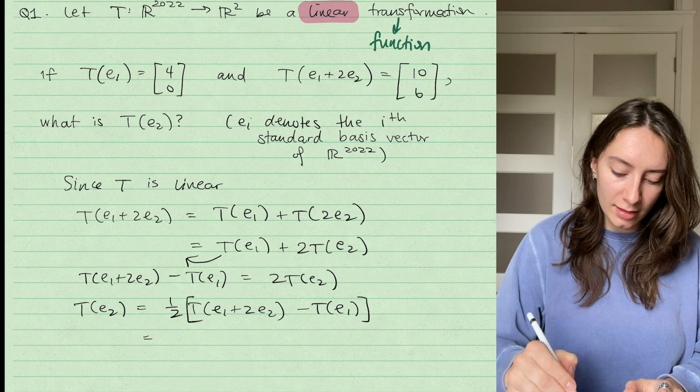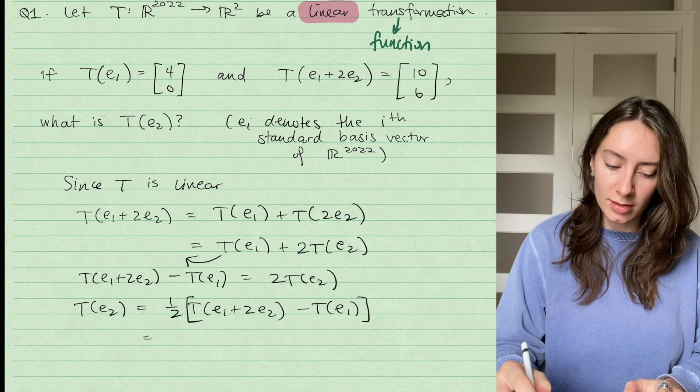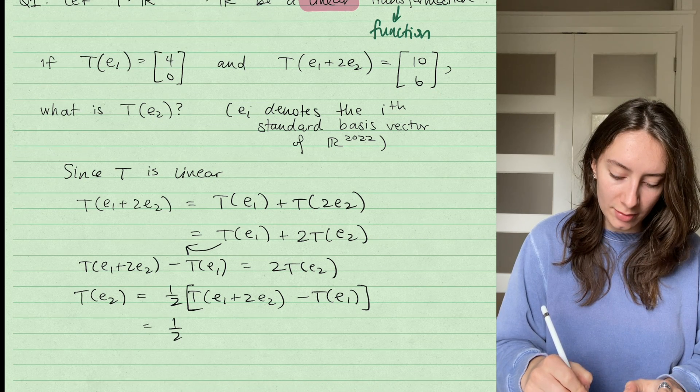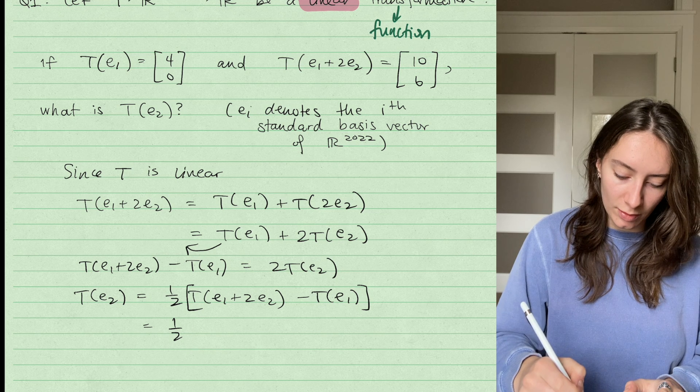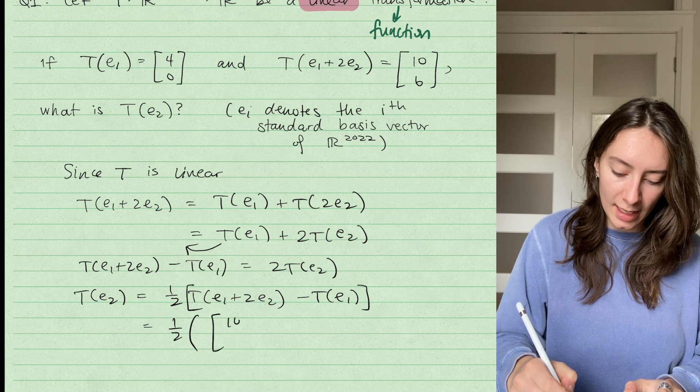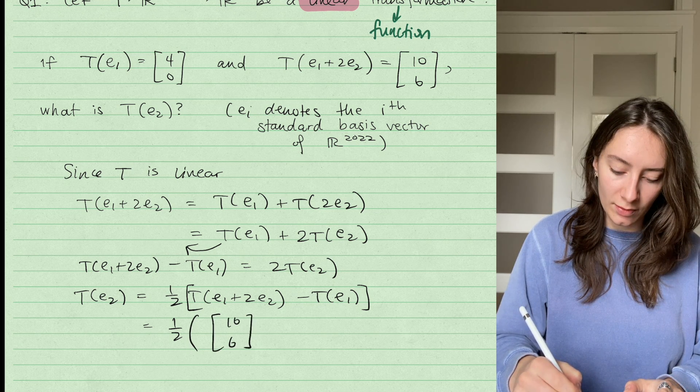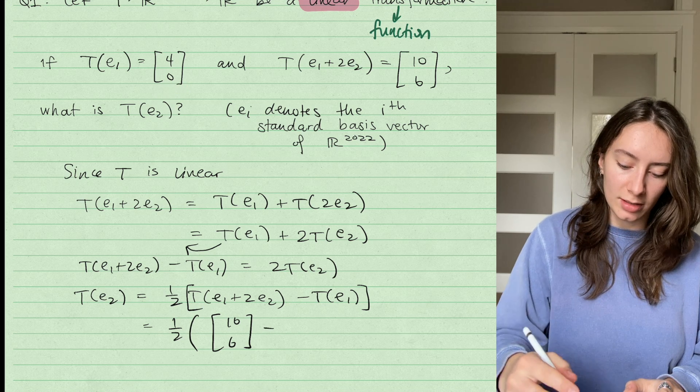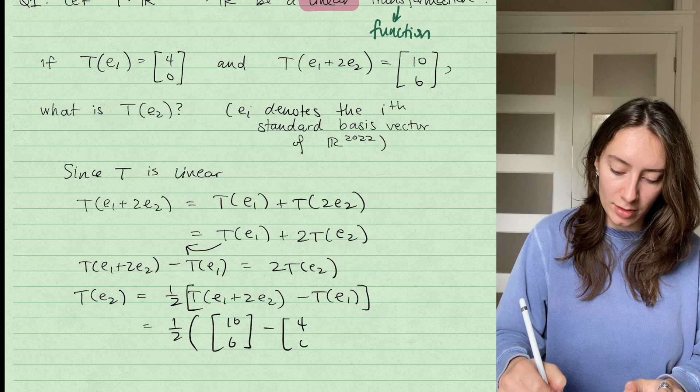And now I know from the question that T(E_1 + 2E_2) was the vector [10, 6]. So I have 1/2 times, I'm going to use a round bracket, 1/2 times [10, 6], that's my vector here. And then minus T(E_1) was [4, 0]. So I have the vector [4, 0].